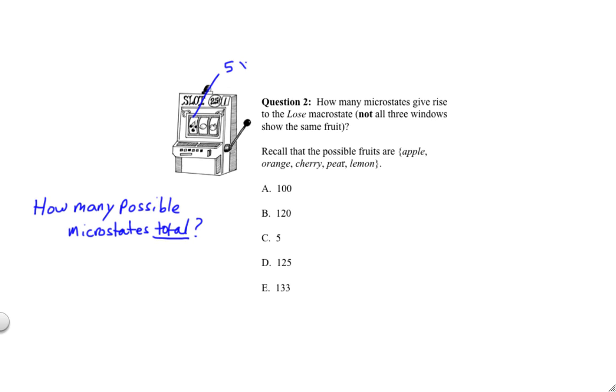And for each one of those, there's five possible fruits that the second window could be, and for each one of those, there's five possible fruits that the third window could be. So, we get that the total number is five times five times five, which is 125.